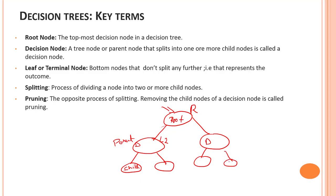Leaf nodes are the end-most nodes which represent the outcome. We also have the process of splitting — splitting means dividing a node into two or more child nodes. For example, node L2 is broken down into C1 and C2. Pruning is the opposite of splitting — it is the process of removing child nodes from a decision node. So removing C1 and C2 from L2 is known as pruning.